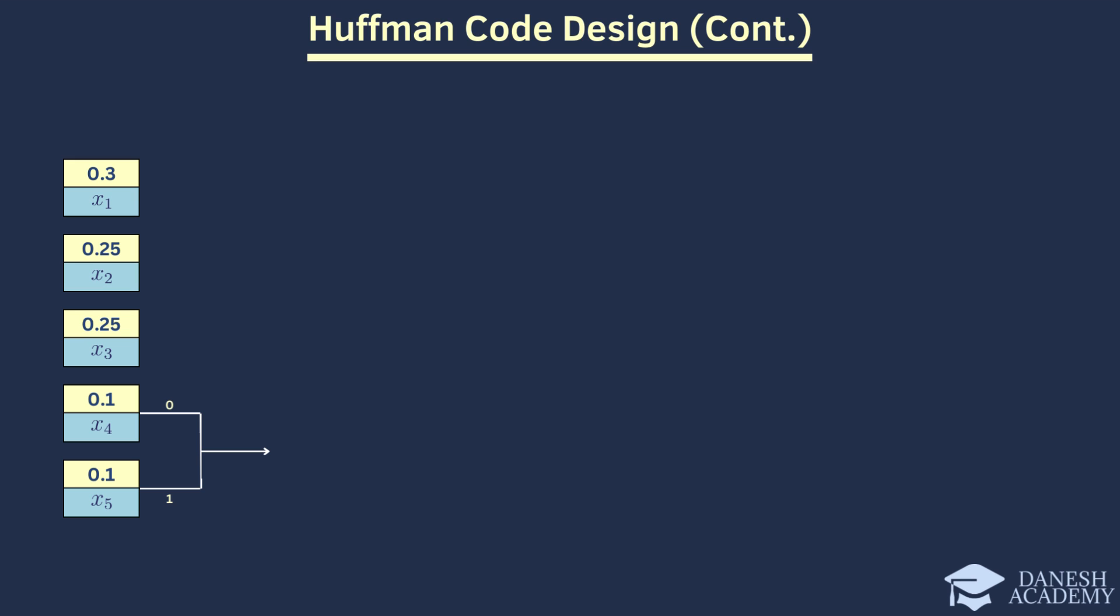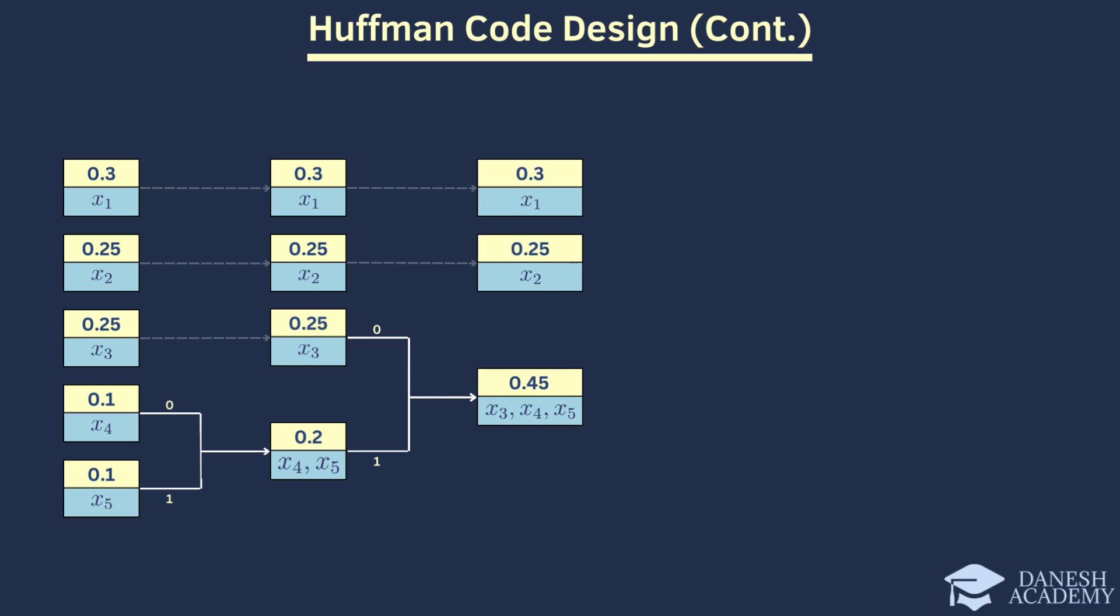For example, if we sum X4 and X5 with probabilities of 0.1 each, the sum becomes 0.2. Since 0.2 is lower than other probabilities, it is placed at the end. The order of the remaining probabilities remains unchanged. In the next step, similar to the previous one, we sum two symbols with lower probabilities together and assign them the values 0 and 1. For instance, if we sum 0.2 and 0.25, the sum is 0.45. Here, we notice that the decreasing order rule isn't followed, so we place 0.45 at the beginning.